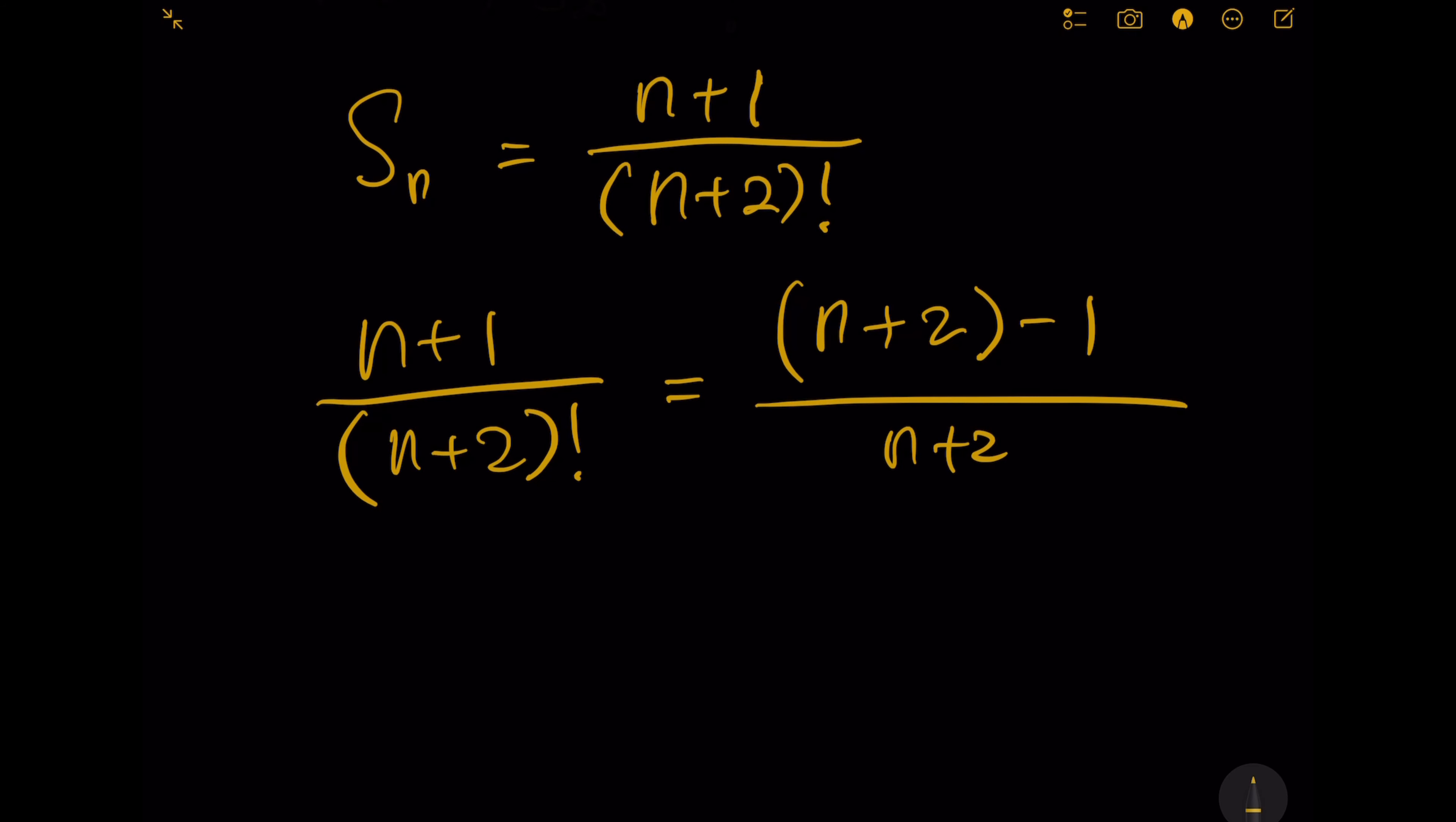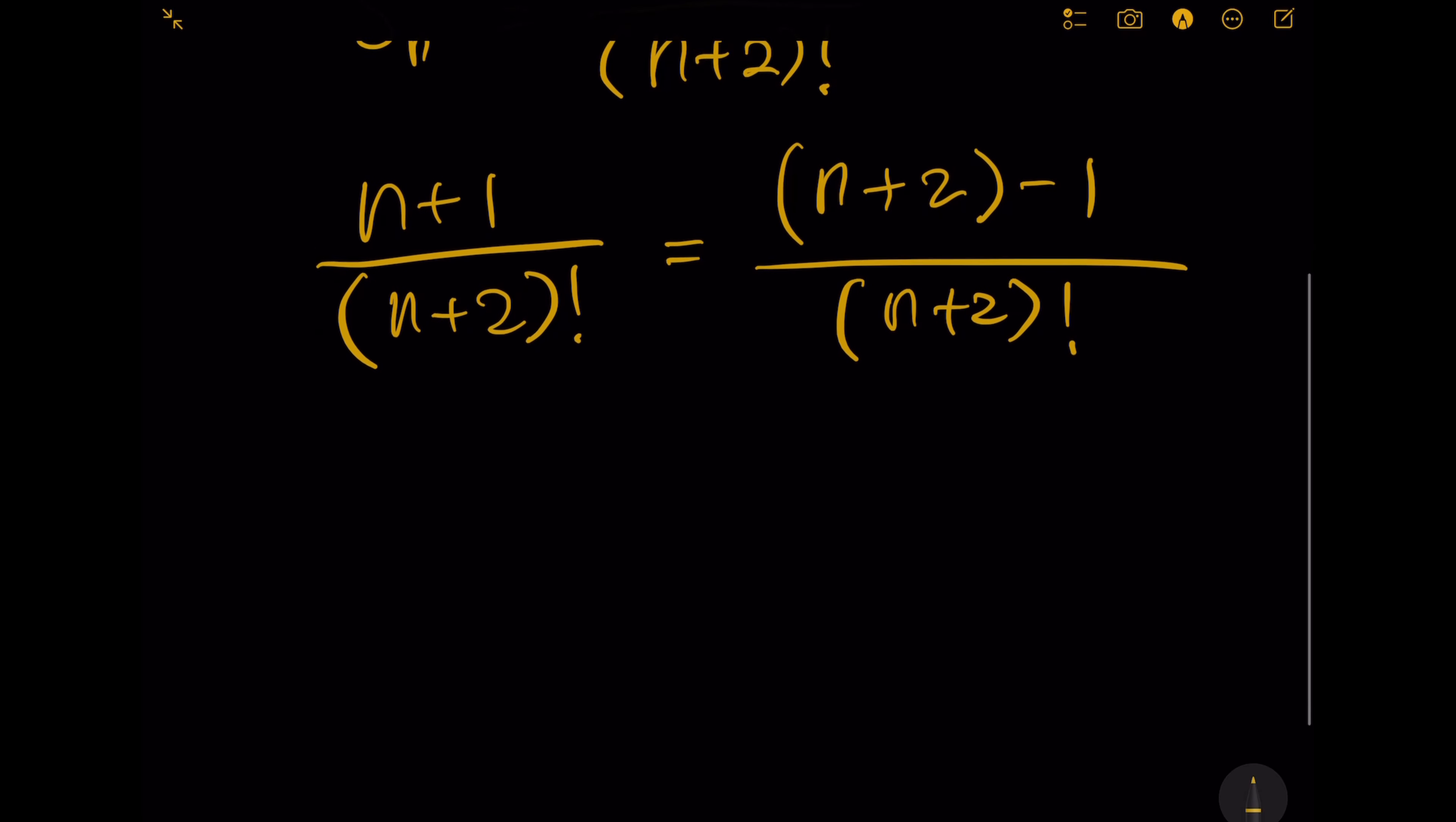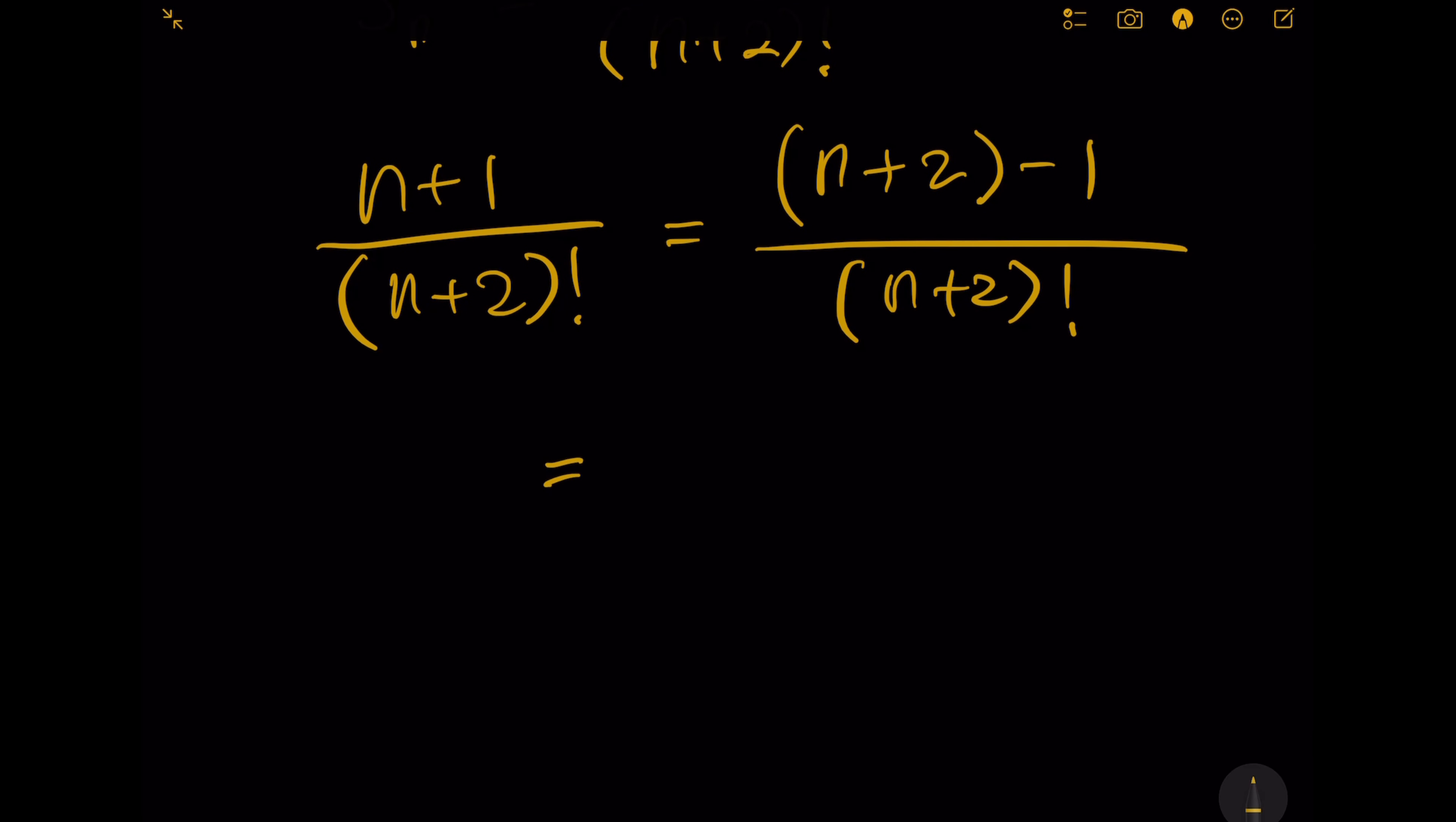We have n plus 2 minus 1 divided by n plus 2 factorial. On the top, plus 2 minus 1 is actually equal to plus 1, but transforming to this format gives us n plus 2 divided by n plus 2 factorial minus 1 over n plus 2 factorial.